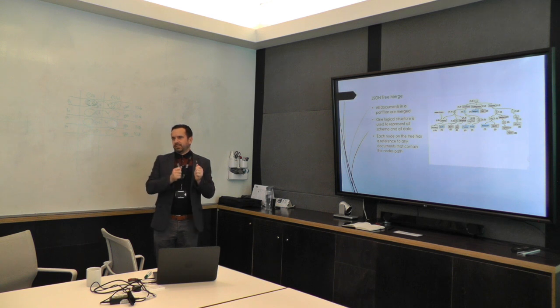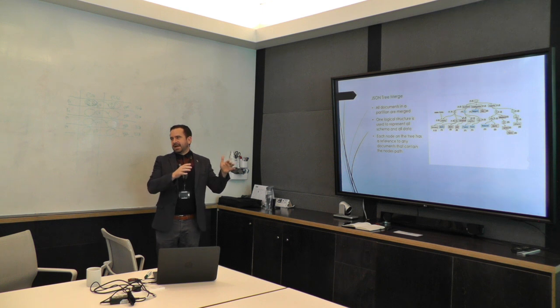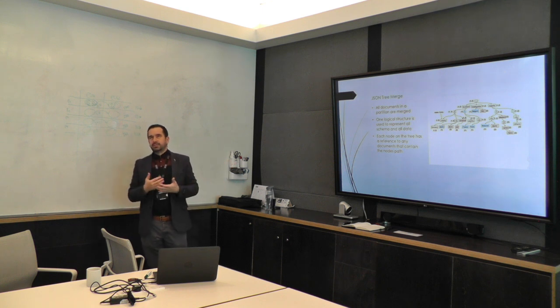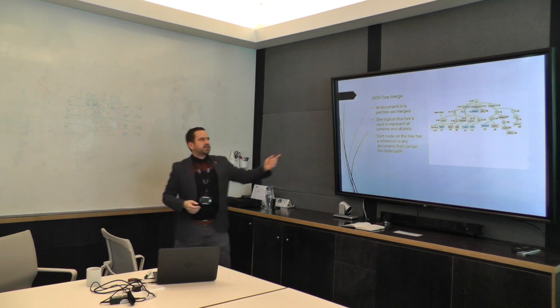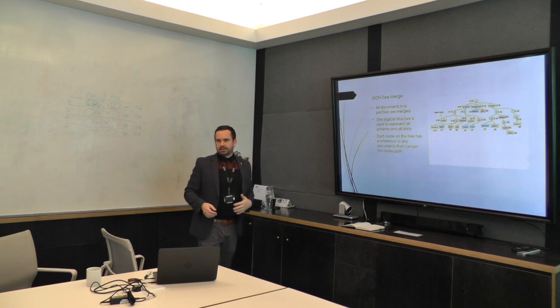Whereas in B-Trees, we put the structure of the data hardened into the definition of the index, so we can't change it afterwards. When you put the structure of the data into the index, it becomes very flexible. So when you want to add new attributes to your JSON structure, it's just a new branch that's added into the tree.